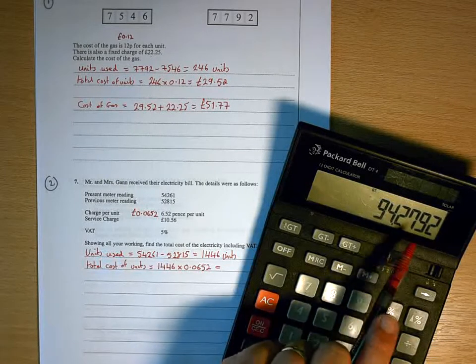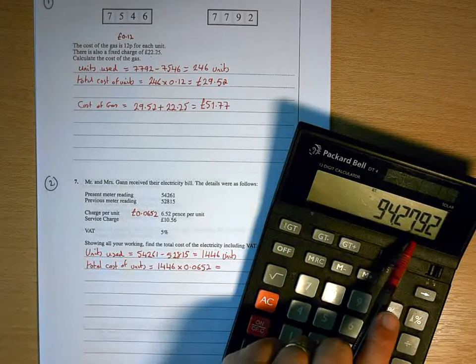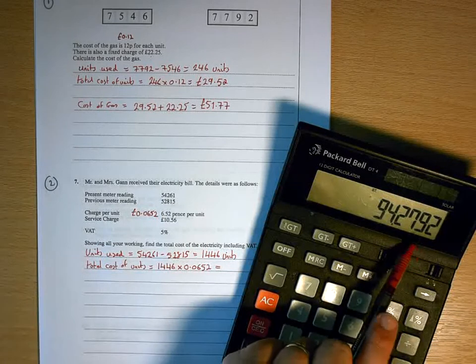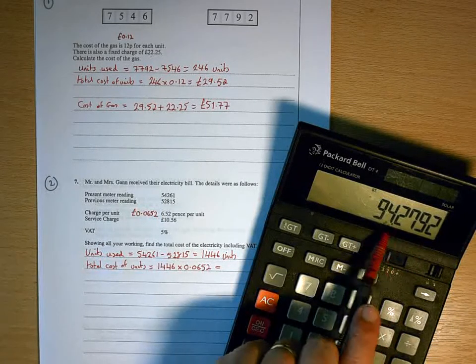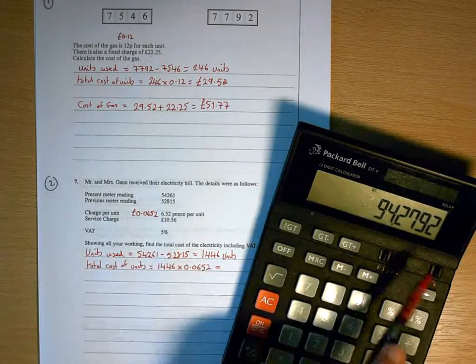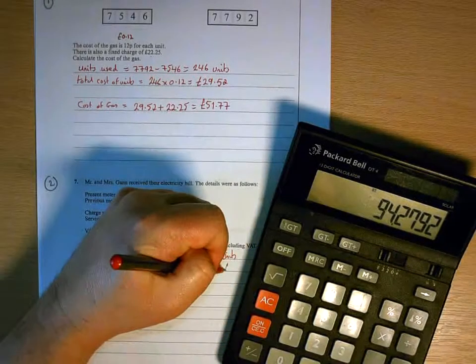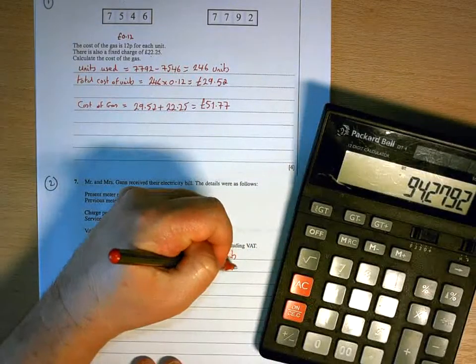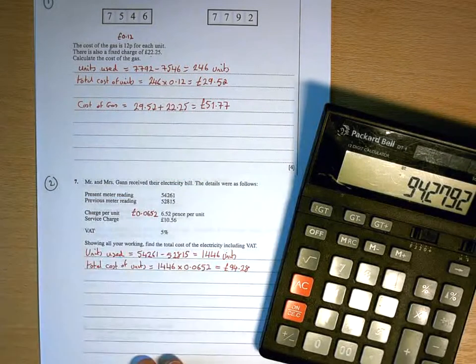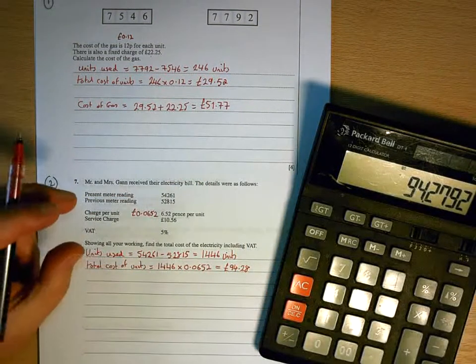But when we round, we look at the next decimal digit. And if it's 5 or above, that means that that's actually going to be closer to 94.28. So when we write that on our answer, we would write 94.28. So that's the total cost of the units.